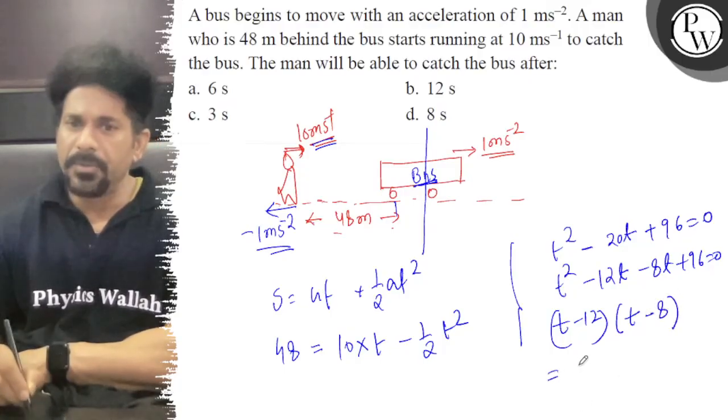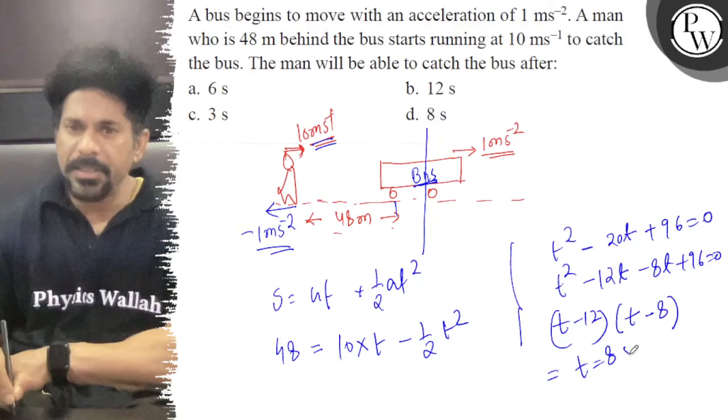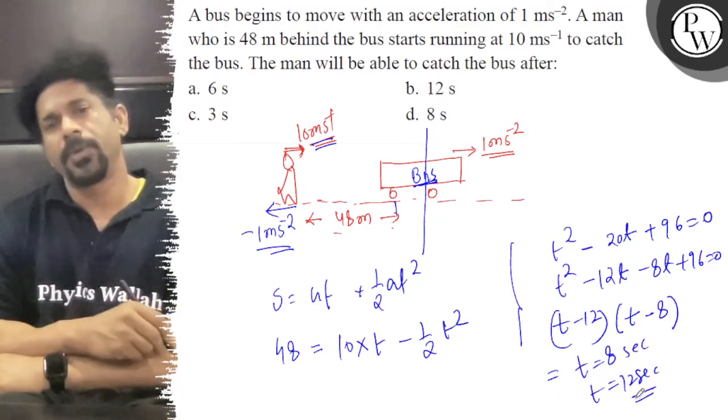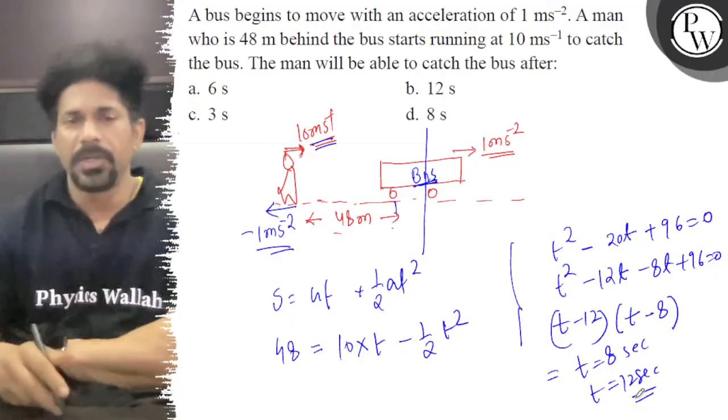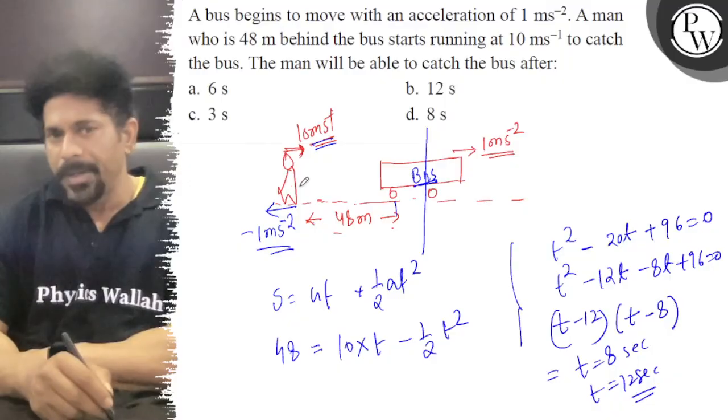So that will equal t equals 8 seconds and t equals 12 seconds. So now we have two times - it's confusing. It is 8 and 12. The velocity is 10 meters per second.